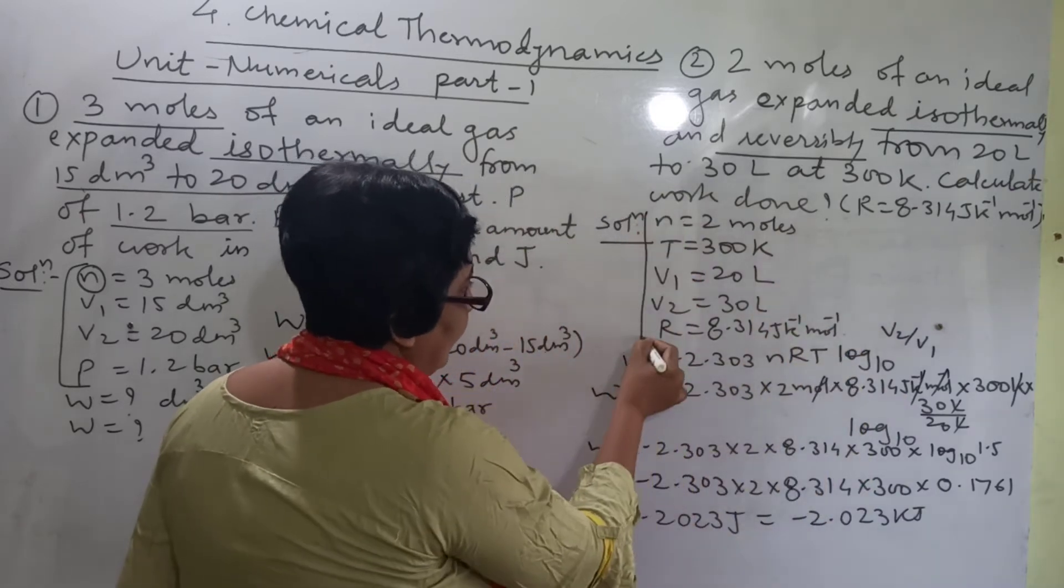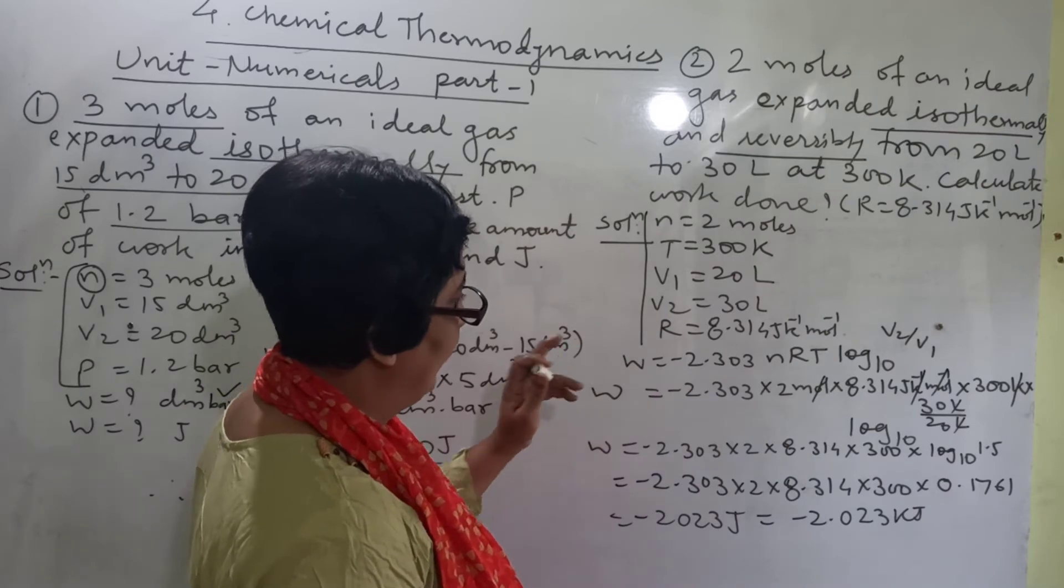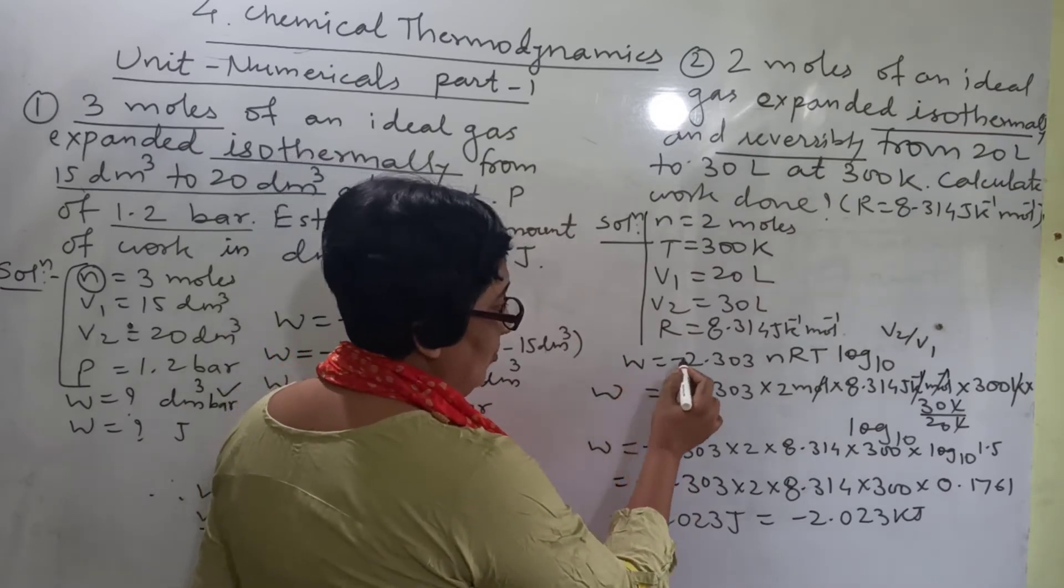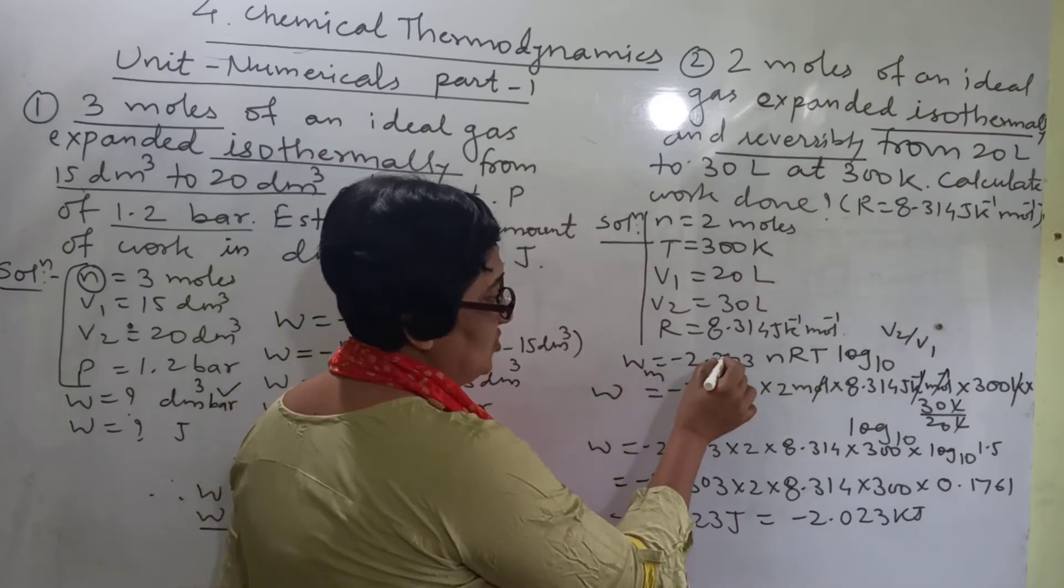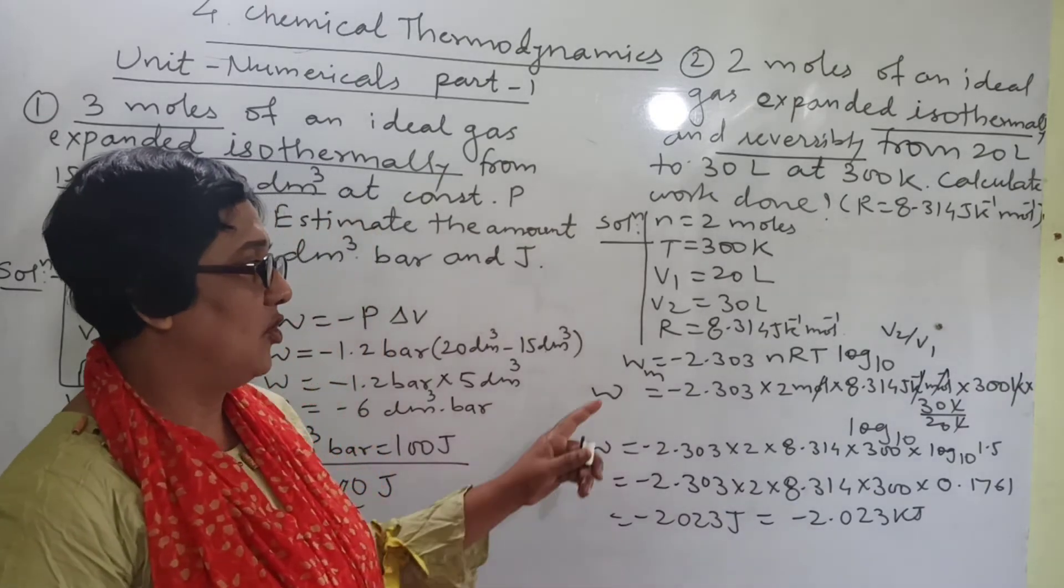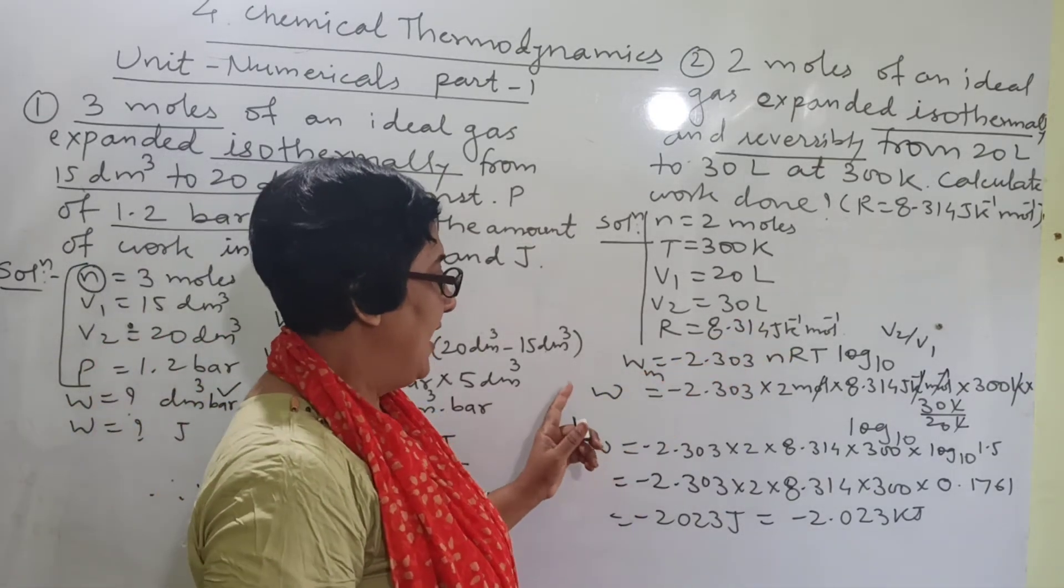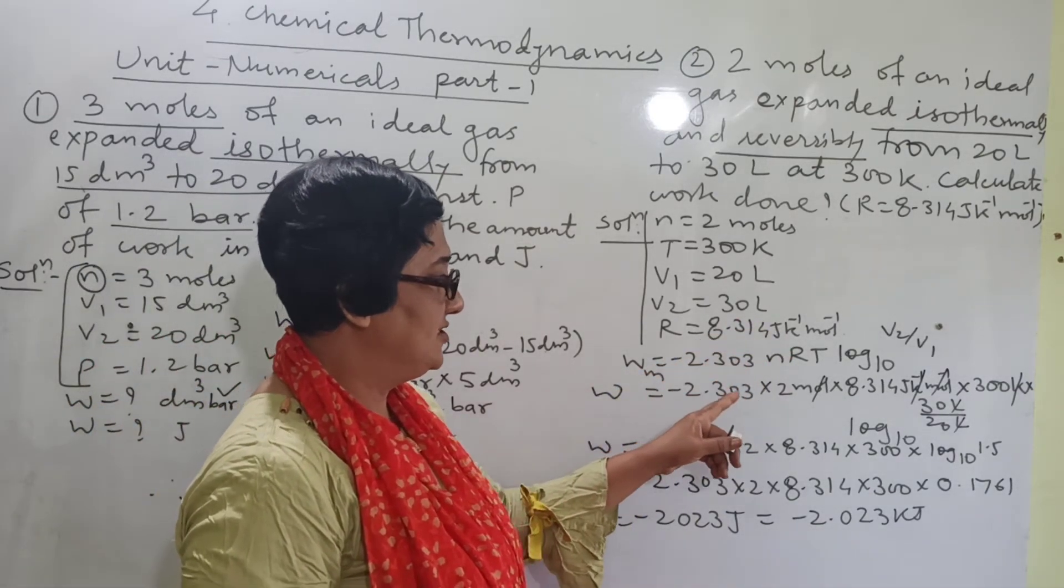Write down again all the data here. And after writing, write down the formula. W equal to maximum work formula minus 2.303 nRT log V2 upon V1. And W equal to minus 2.303.